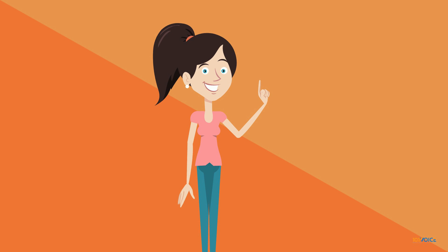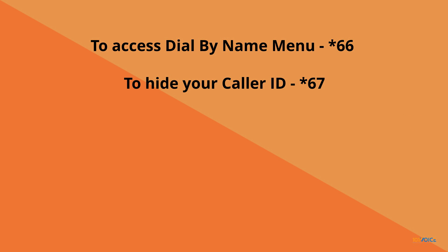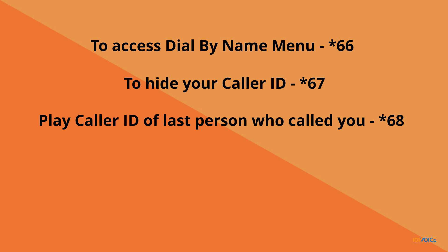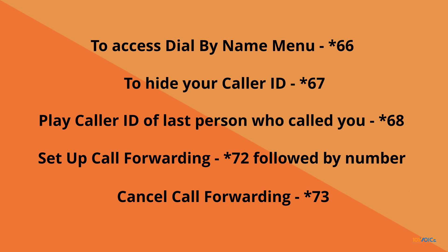Here are a few more useful call functions. To access the dial by name menu, dial star 66. If you want to hide your caller ID when making a call, dial star 67, followed by the number. To play the caller ID of the last person who called you, dial star 68. To set up call forwarding, dial star 72, followed by the number to which you want to forward your calls. To cancel call forwarding, dial star 73.